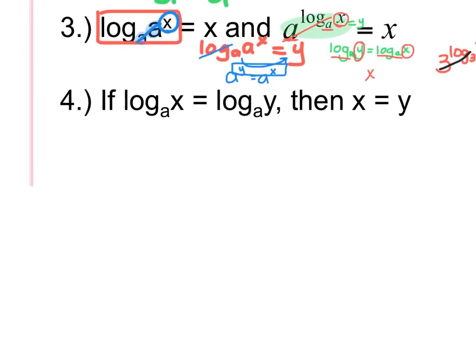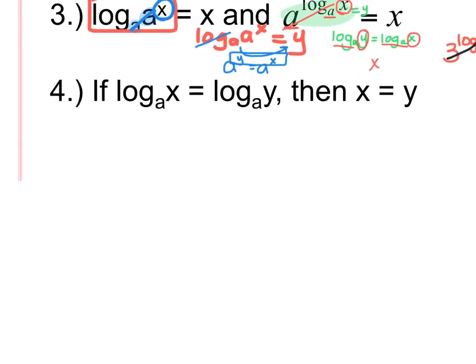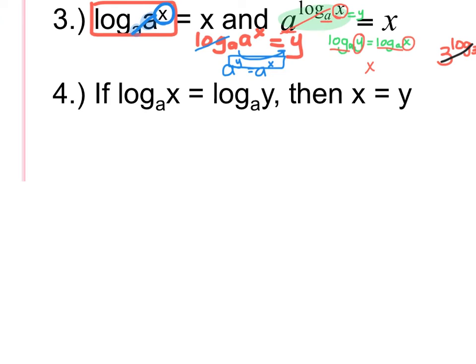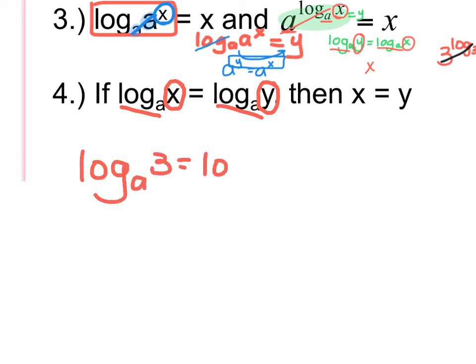This last property is just the one-to-one property: if log base A of X equals log base A of Y, then X equals Y. If you have both the log and the base the same on either side of the equal sign, then what is next to the log on each side is equal to each other. So if I had log base A of 3 equals log base A of X, then X would equal 3.